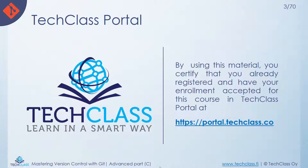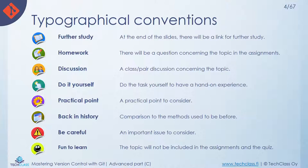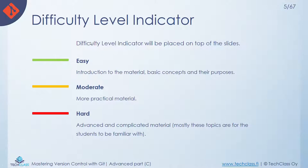Before you start with the material, you need to make sure that you registered and got approved in this course using the link for the e-learning portal. Here are some typographical conventions used throughout the course — make sure to understand them as they serve as a kind of help for going through the materials. The content is divided into three difficulty levels: easy, moderate, and hard.